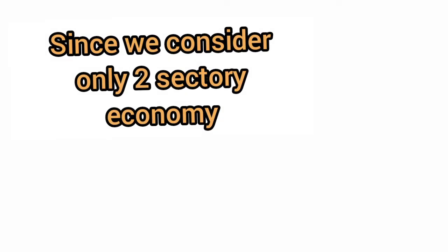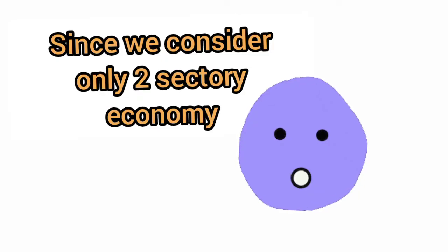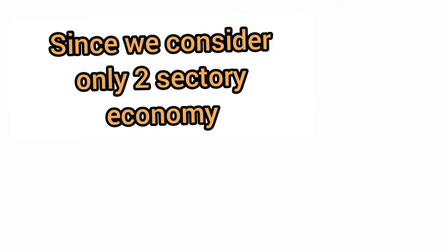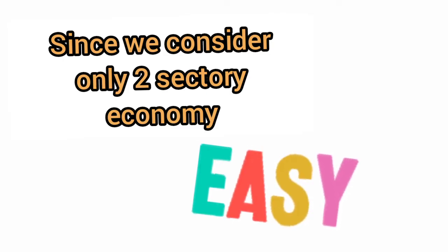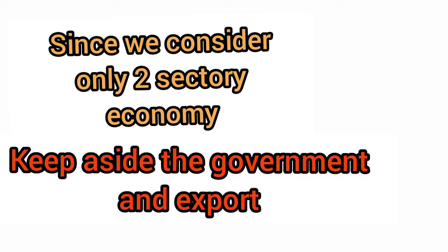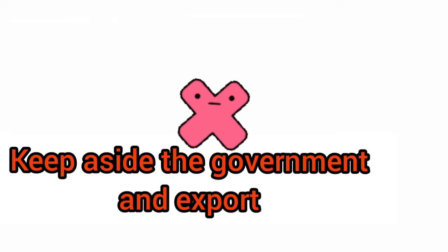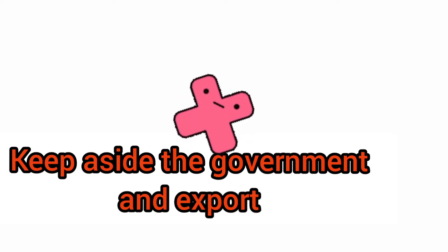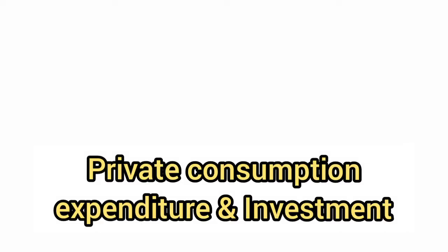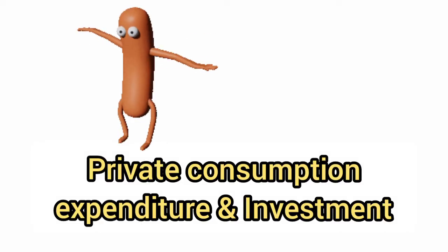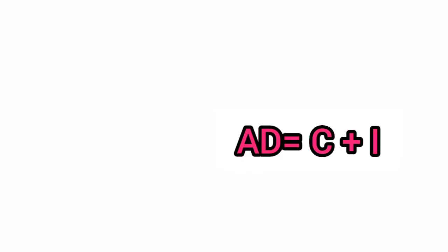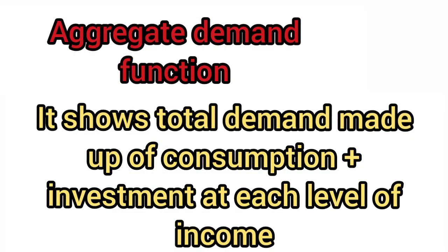Since in 2nd PUC we are learning only about the two-sector economy, the syllabus has not considered the government and net exports part. So we are considering only two things: private consumption expenditure and investment. Therefore, aggregate demand equals C plus I, where C is private consumption expenditure and I is investment.